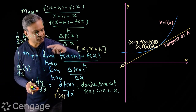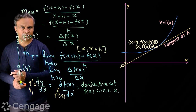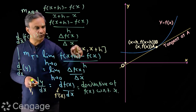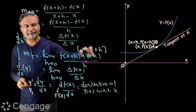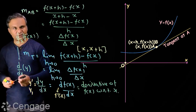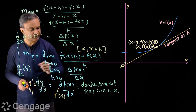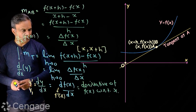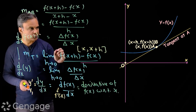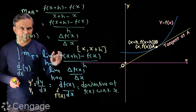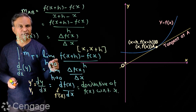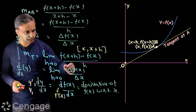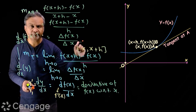This is called the first definition or first principle of the derivative. The study of derivatives starts with this limit, so it is called the first principle of derivative. The process of finding the derivative is called differentiation. The derivative of a function with respect to x is actually the slope of the tangent to the curve — it represents the slope of the tangent to the curve at point A.